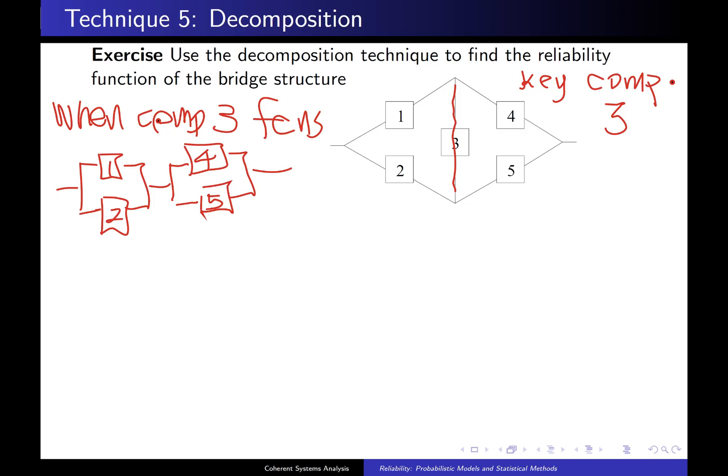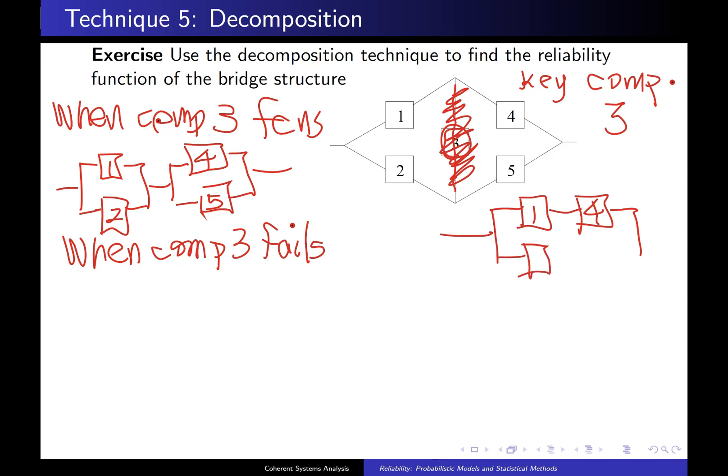Now, the next thing you want to ask is, what does the system look like when component 3 fails? So, in this particular case, if component 3 is guaranteed to be failing, that's like getting rid of this middle portion, and all of a sudden, when you look at that, you can see right away what you have is you have 1 and 4 along the top. That's one path through that system, and then you have 2 and 5 along the bottom, and that's it. So, there is your system in that particular case.